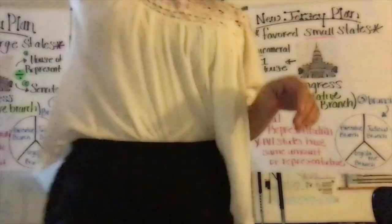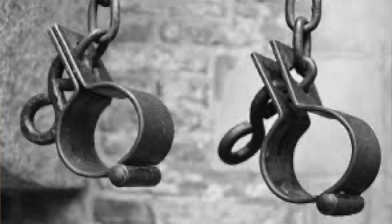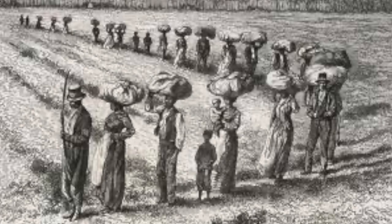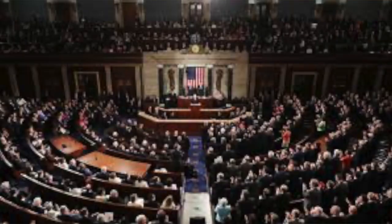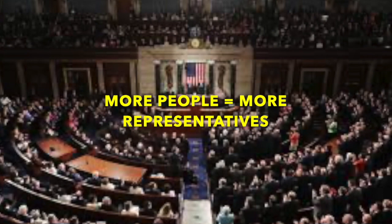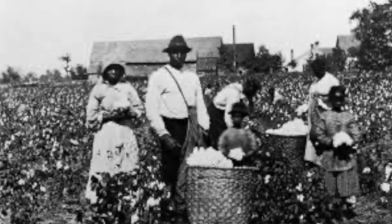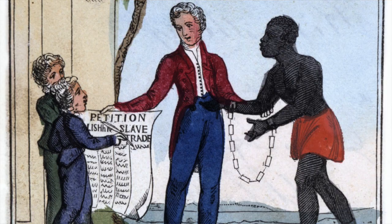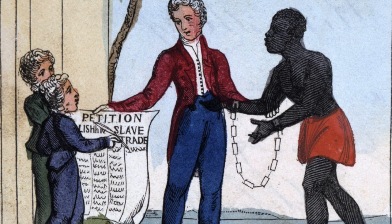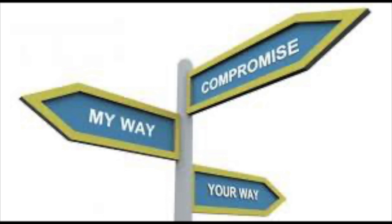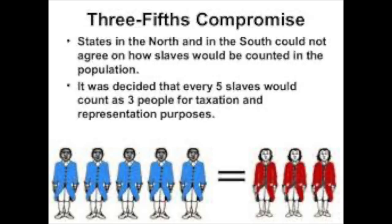Another major issue at the Constitutional Convention is slavery. The South is adamant on slavery because that's how they make their money — their economy works off of free labor. Since the House of Representatives uses proportional representation, the South says they should count their slaves towards their population. The North — the anti-slavery side — says that's not fair, because slaves are considered property, not equal people. But we need to compromise. They end up agreeing that out of every five slaves, three of them will be counted towards representation in Congress and towards taxation. That is known as the Three-Fifths Compromise.